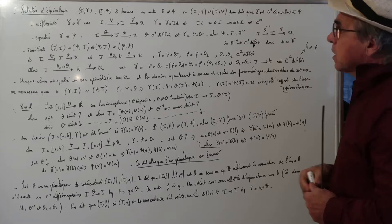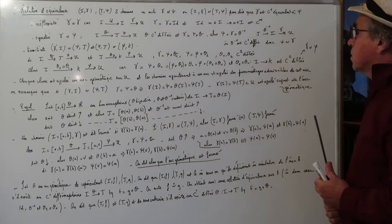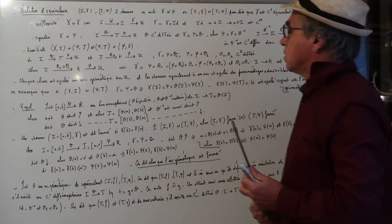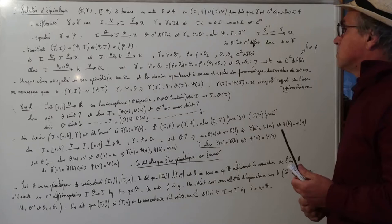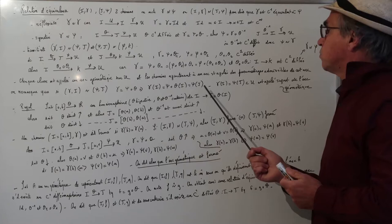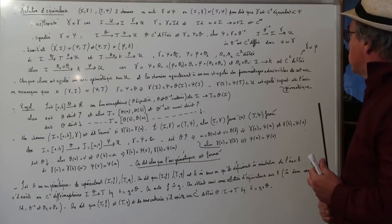Chaque classe est appelée un arc géométrique sur U, et les chemins appartenant à un arc sont appelés les paramétrages admissibles de cet arc. Si Iγ est équivalent à Jψ, alors l'image de Iγ est égale à l'image de Jψ, c'est-à-dire que cet ensemble de points s'appelle le support de l'arc géométrique, qui est le même quelle que soit la représentation admissible.